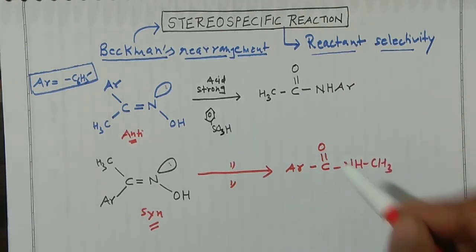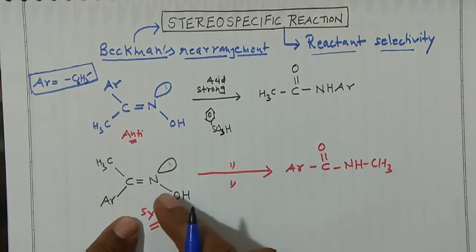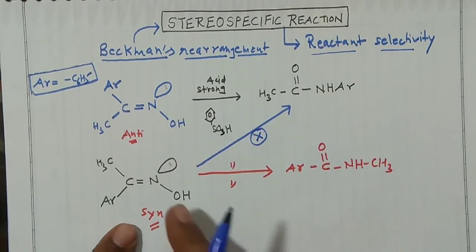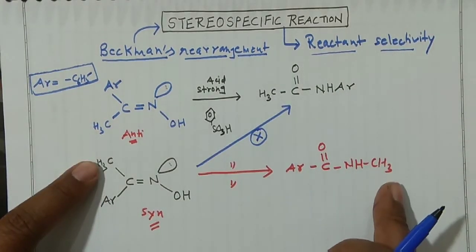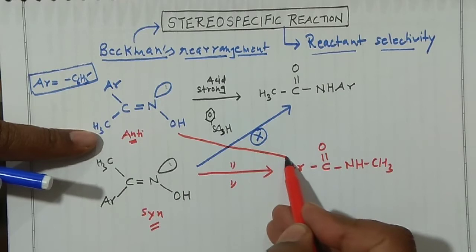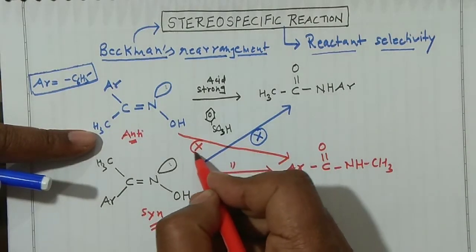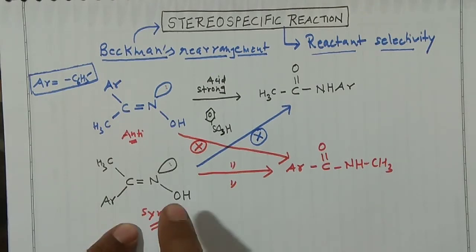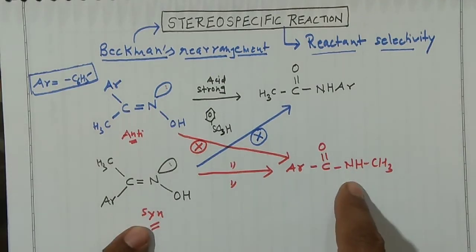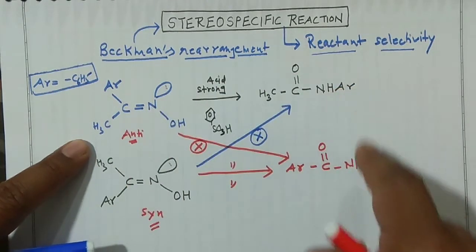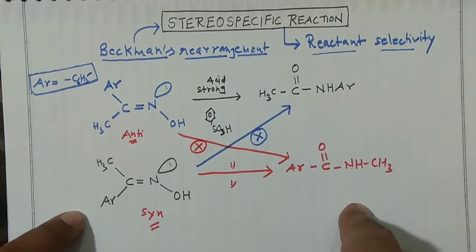These two products are different. If you start with the first isomer and try to make the second product, it will never form — it will always form its own specific product, where the methyl group migrates. Similarly, if you take the second reactant, it will give only its corresponding product. This is why it is called reactant selectivity.